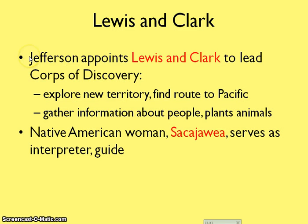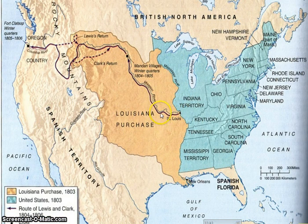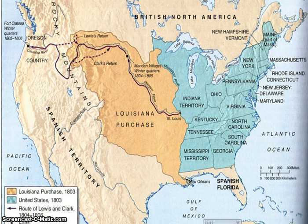Jefferson was excited about all this new land, so he appointed two men — Lewis and Clark — as the first to lead an expedition through these newly acquired western lands. They gathered information about the people living there, the plants, and the animals. Lewis and Clark needed help navigating, and they received assistance from a Native American woman named Sacagawea, who served as an interpreter as they traveled through the west. Their route went from the Indiana Territory all the way to the Pacific, with Sacagawea's help.